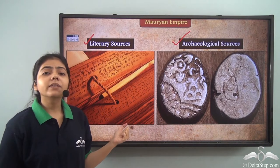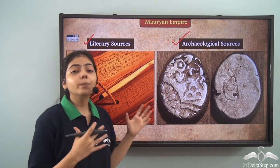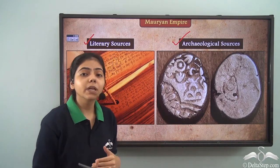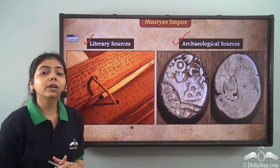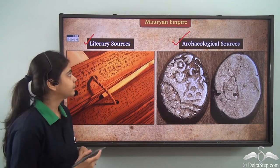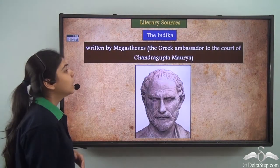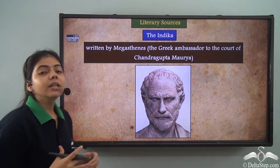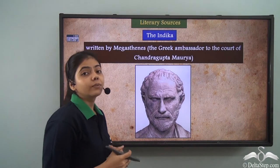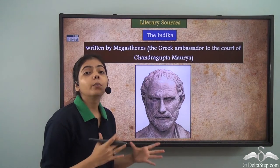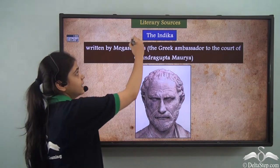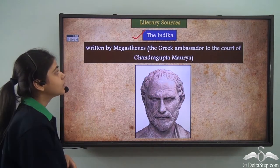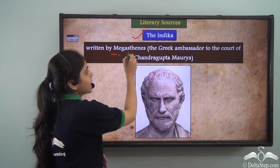These serve as the history bricks which we join together to find information and to reconstruct the past. Now, one of the major literary sources we have about the Mauryan Empire is the Indica, and Indica was written by Megasthenes.